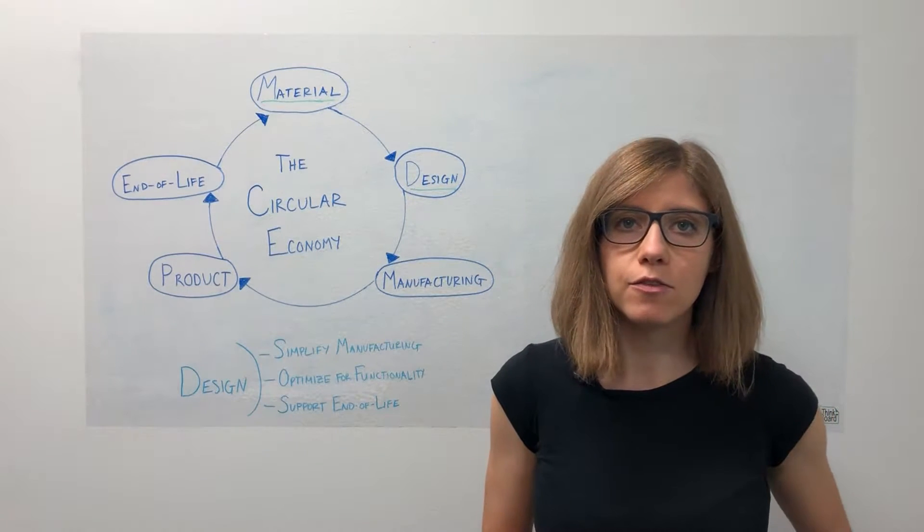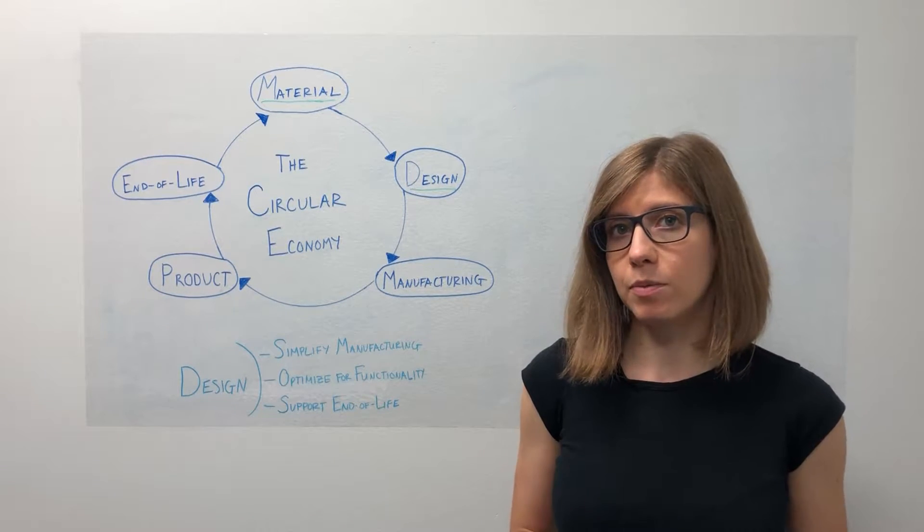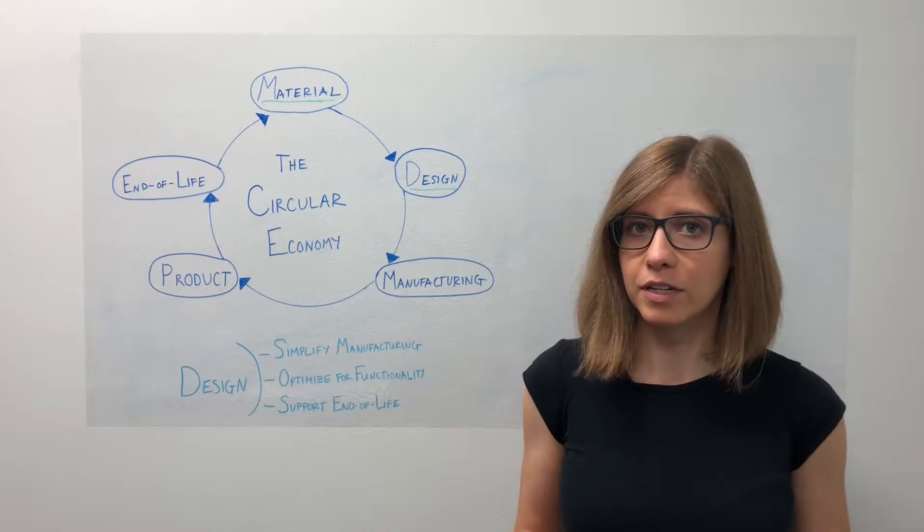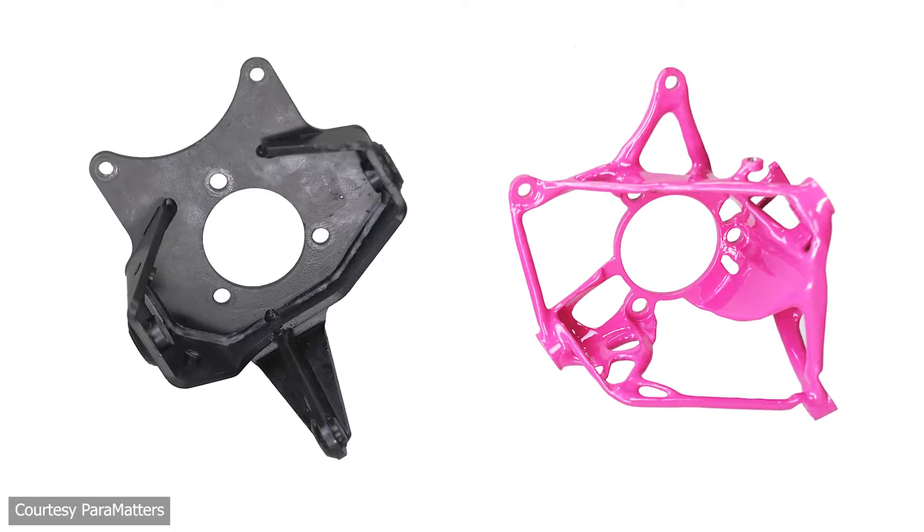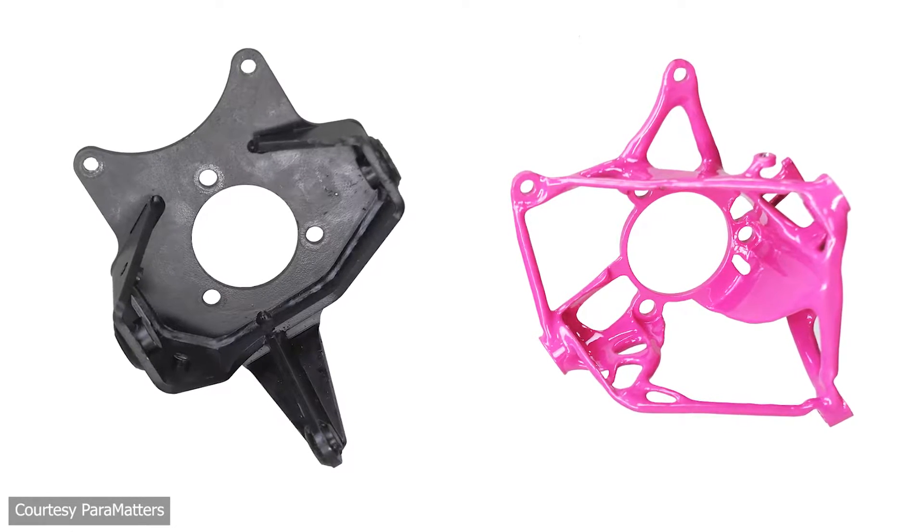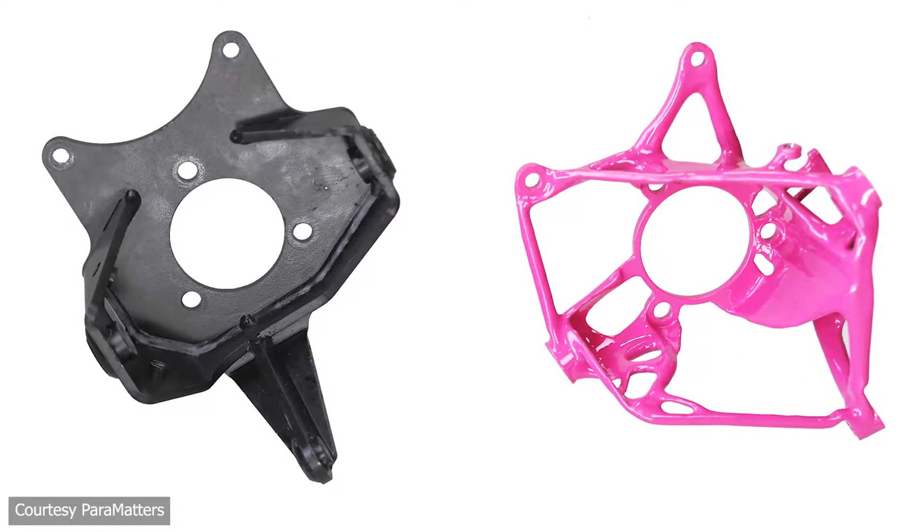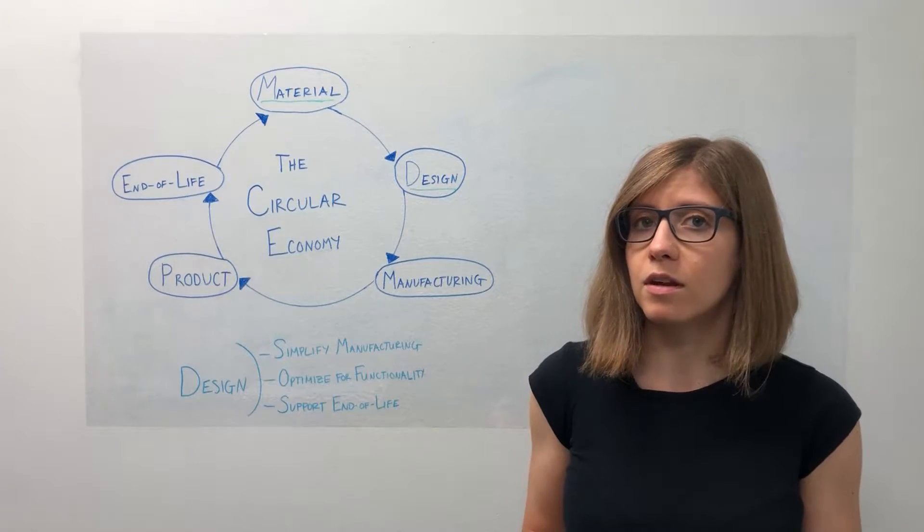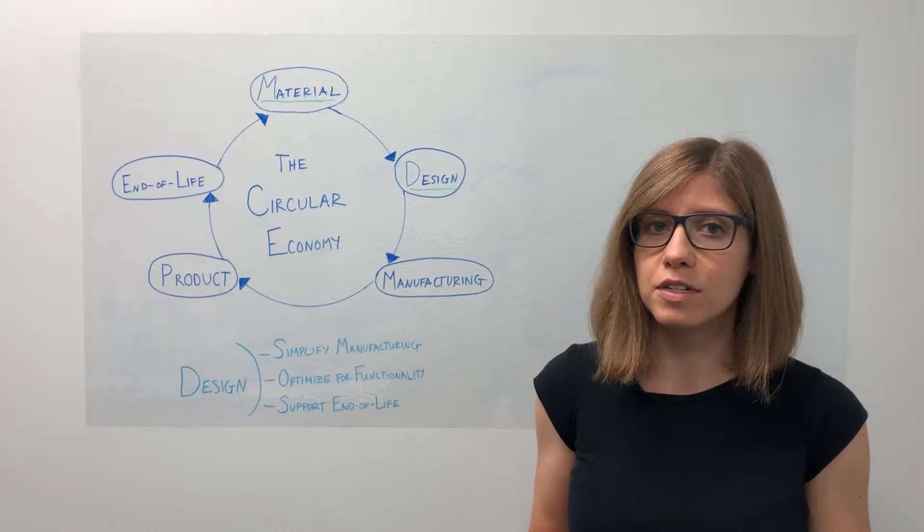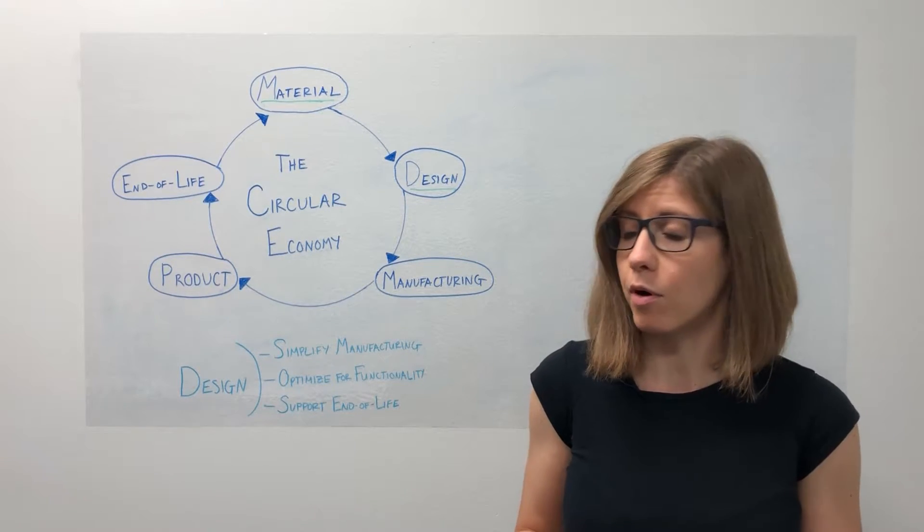The first is by simplifying manufacturing. We know that 3D printing is great at things like assembly consolidation. If you're able to take something that used to be a couple of different parts put together and print them as just one piece, you're reducing the use of fasteners, you're reducing the number of materials, and you're also reducing the hand labor necessary to make that part.